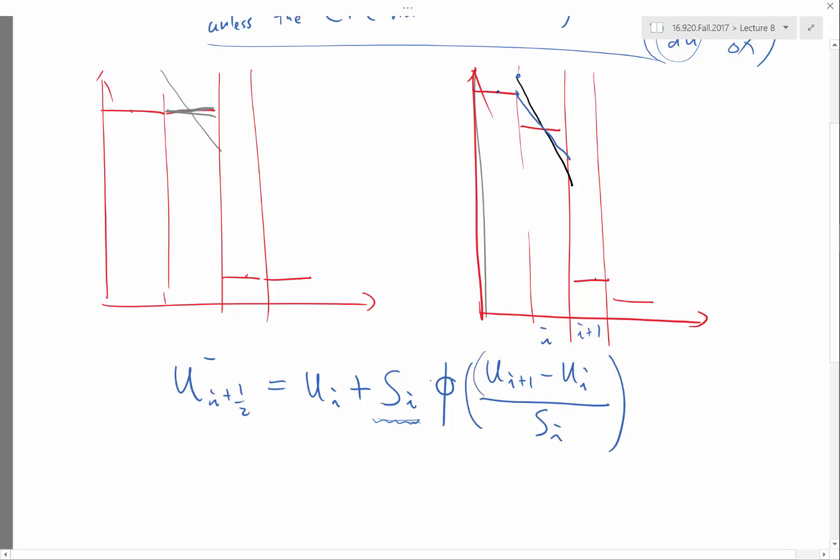Usually this is also divided by delta x because I want to make both denominator and numerator to be in the same order. Both are slopes.